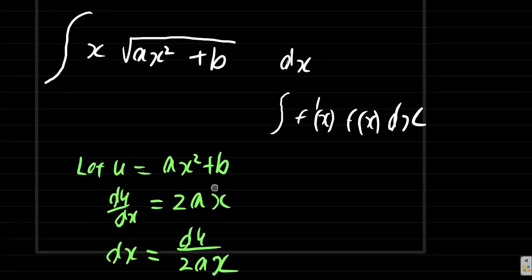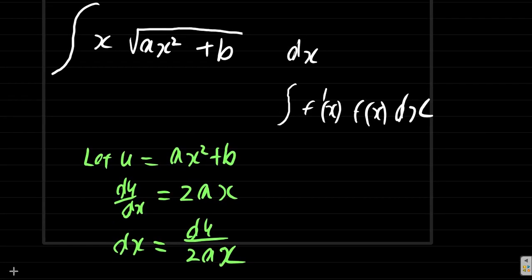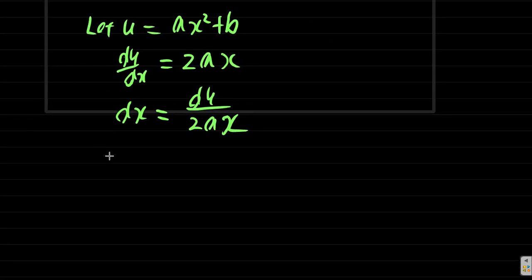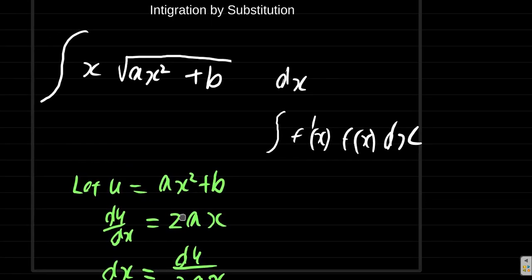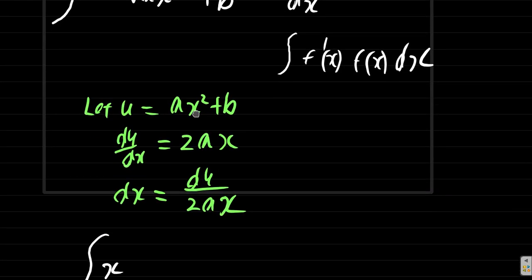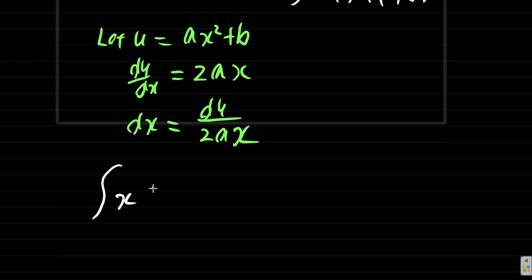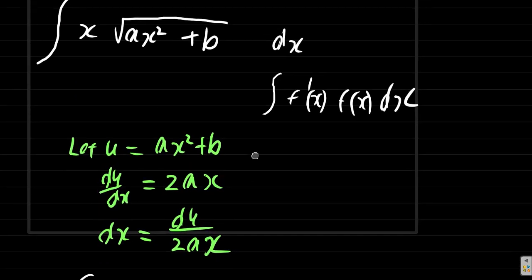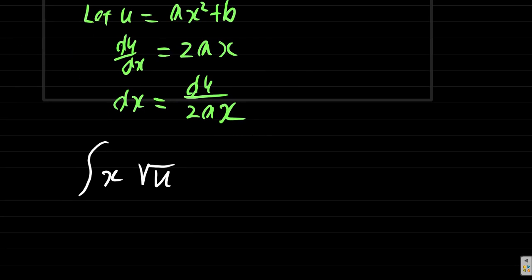Now, let's rewrite the integral. The integral of x, we have the integral of x times the square root of u dx. But we want it in terms of du. dx is du over 2ax.